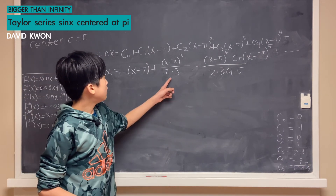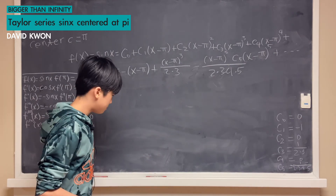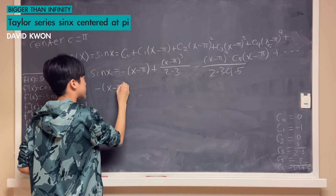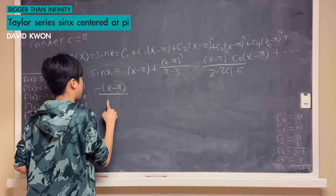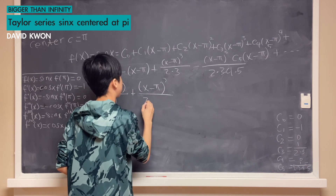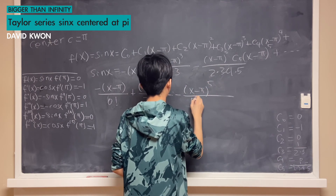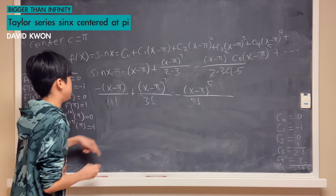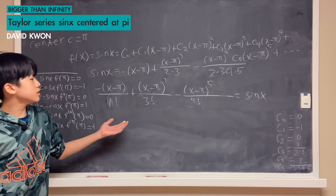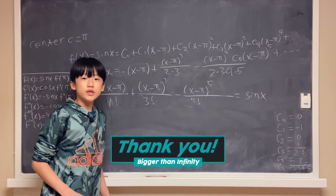Noticing carefully, the denominators are actually factorials just being expanded. So we have sin x equals minus (x−π) over 1 factorial, plus (x−π)³ over 3 factorial, minus (x−π)⁵ over 5 factorial, and so on. This is our answer for sin x expressed as a Taylor's series centered at π. Thanks for watching and see you in the next video, bye!